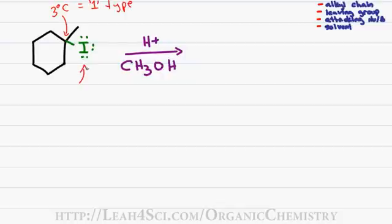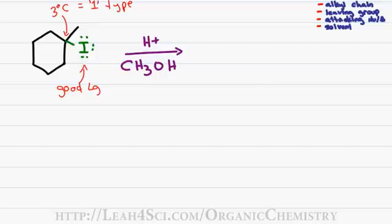The next thing we look at is iodine. Iodine is a very large halogen, and when it leaves and forms a negative charge in solution, we're able to distribute that charge over the large molecule, making it a good leaving group. This doesn't necessarily distinguish between a 1 or 2-type reaction, but rather tells us that the reaction will be relatively quick compared to a reaction with a bad leaving group.